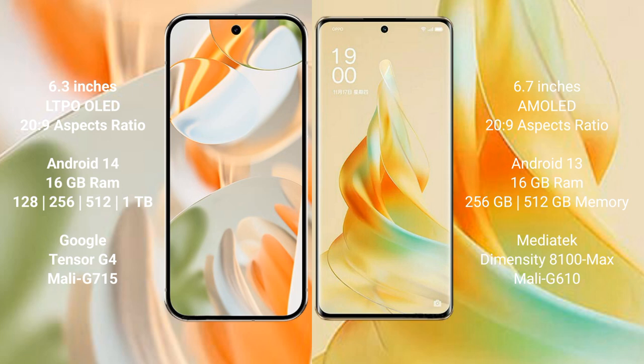Google Pixel 9 Pro runs on the Android 14 operating system, while Oppo Reno 9 Pro runs on the Android 13 operating system.